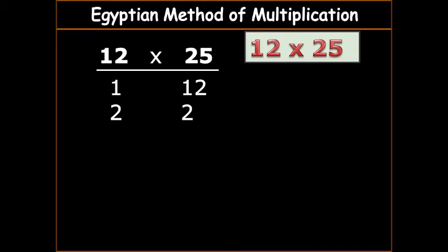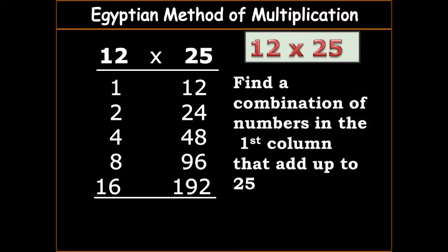You always double one side of it. So 1 times 12, then 2 times 24. 2 times, so 4 times 48. Take it as 2 times, so 48 times 2 or double 48 is 96. We have 16 because 8 plus 8 is 16. Double 96 is 192.